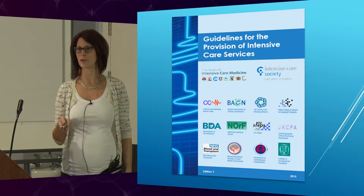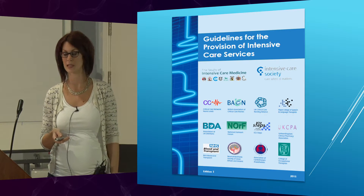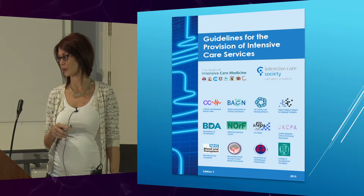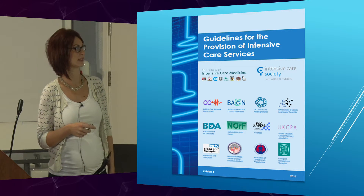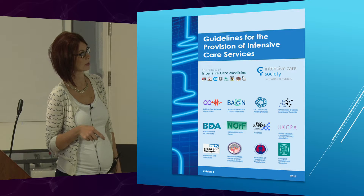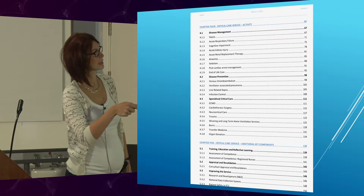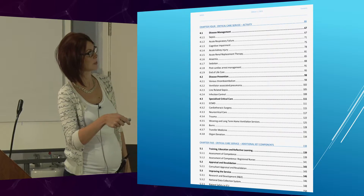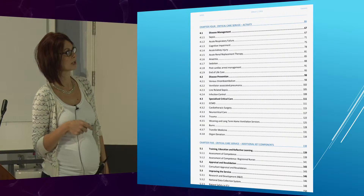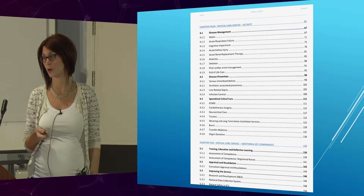Have all of you heard of the ITU standards — ICU standards — that were brought out in 2013? In 2015, the Guidelines and Provision of Intensive Care Services was introduced. This is a collaboration between several groups and is quite a useful guide. Under disease management, the one we're looking at today is acute respiratory failure. This provides recommendations for practice that all our ICUs should be working against.